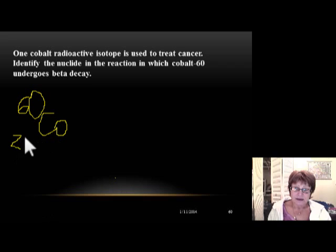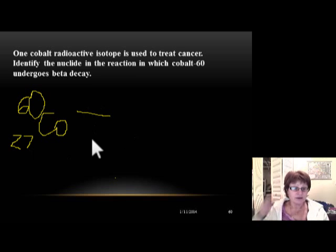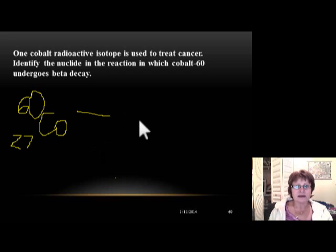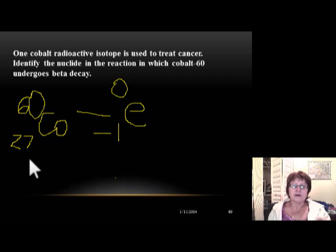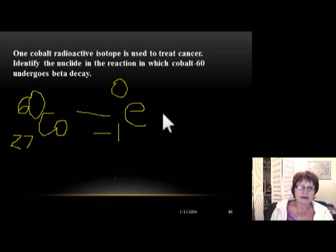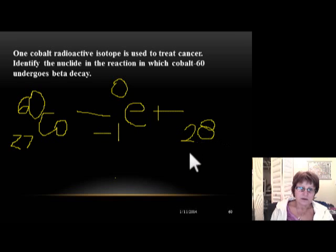It decays by beta, so we put the symbol for the beta particle — the electron, -1 and 0. To calculate the atomic number of the new element, remember that one neutron loses an electron and becomes a proton, so the atomic number goes up by 1: 27 becomes 28. The mass number does not change — it stays 60.